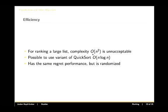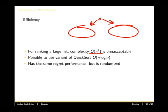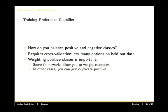For a really large list, this becomes unacceptable because you have complexity N squared at test time. But you can use a variant of quick sort where you randomly select a pivot, take all of your data and say that some are greater and some are less, then recurse on those two sets and break it down until you get a total sort. This actually gives you the same regret performance, but it's a randomized algorithm. There are some details we're not talking about, like balancing positive and negative classes. It also requires cross validation to try out some of these options. Weighting the positive cases is really important because those are the things that you want to get right. You need to make sure that your classifier allows you to weight examples.